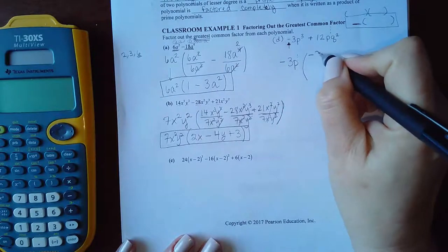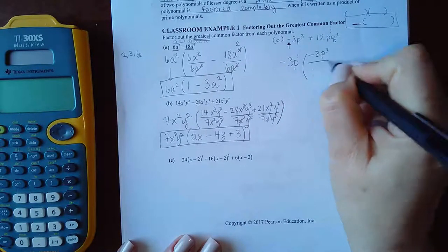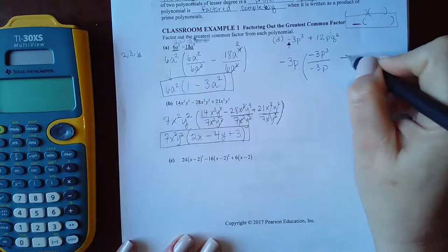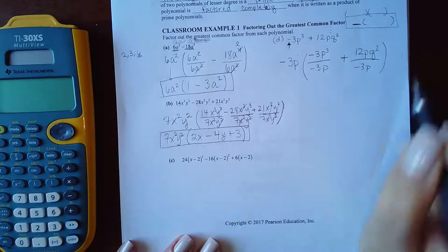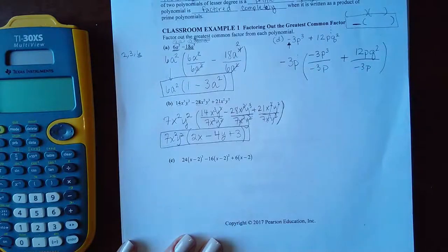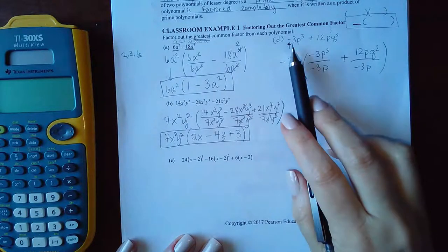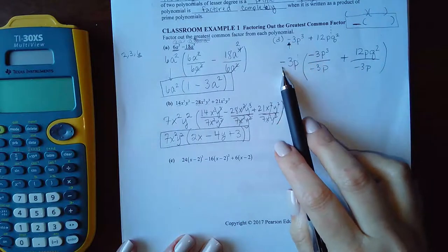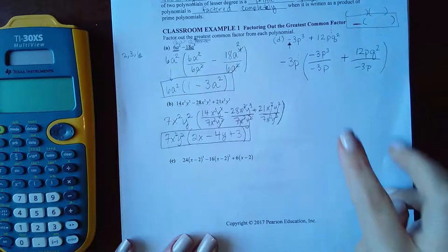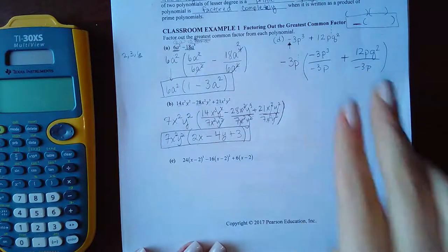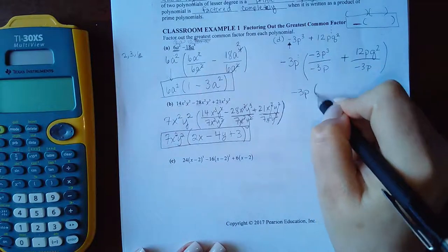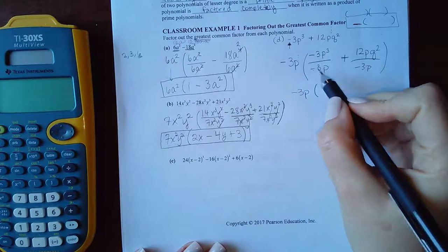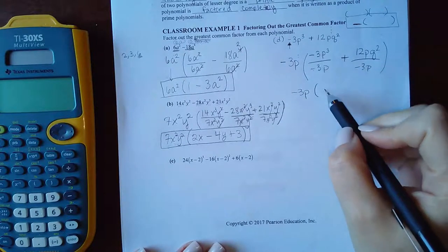And this doesn't have any Qs. So you can't take out any Qs because they don't have Qs in common. And so then how do I figure out what would go inside the parentheses? Take both of these terms and divide them by that monomial you've identified as the GCF. And because this guy was negative, the monomial had to be negative, which means what I'm dividing by has to be a negative.